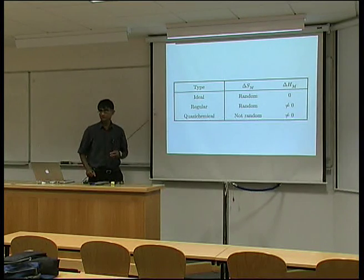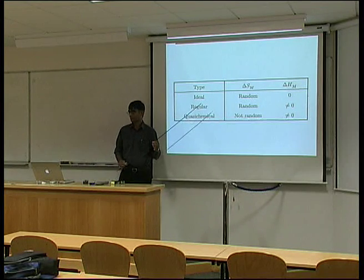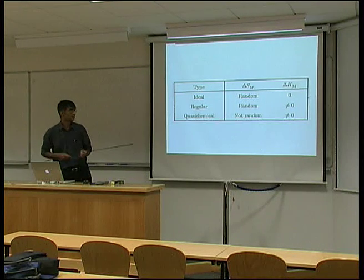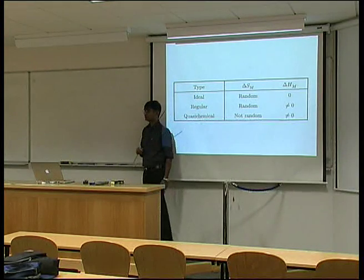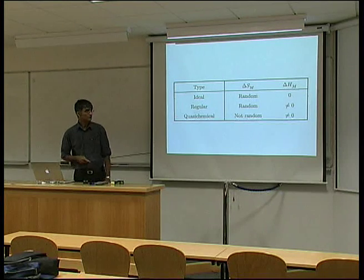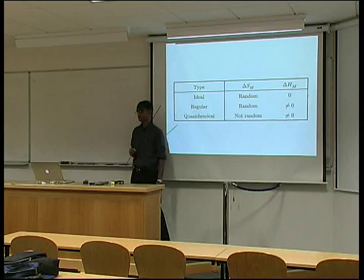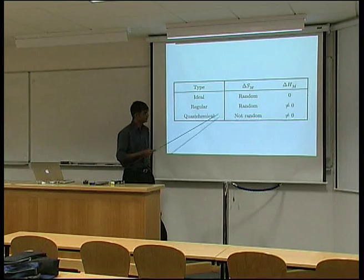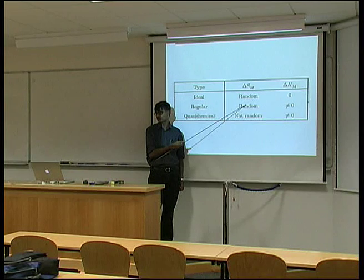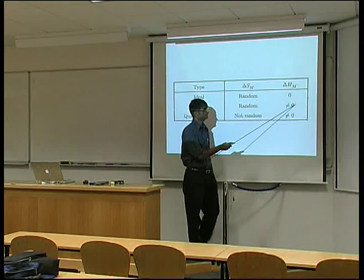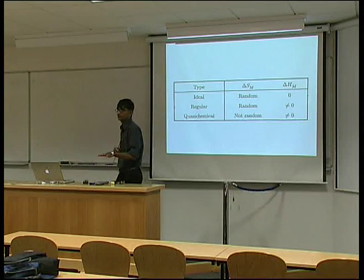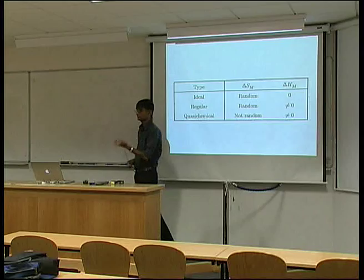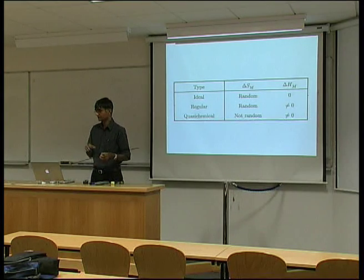We did two kinds of solution models. The first was the ideal solution, where all atoms are distributed at random, because the entropy of mixing is zero. It's easy to calculate the total number of AA bonds, AB bonds, and so forth, and therefore we can estimate accurately the entropy of mixing. In the regular solution model, we again calculate the entropy of mixing using exactly the same equation as in the ideal solution, even though the entropy of mixing is finite — so that's obviously an approximation.